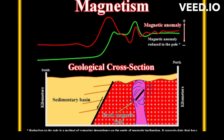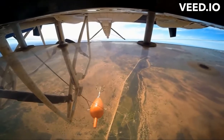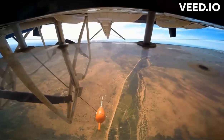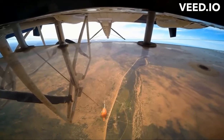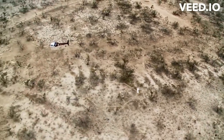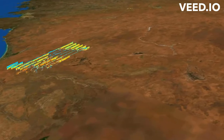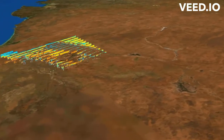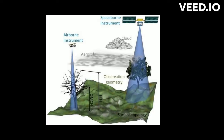Geophysical methods include seismic, gravitational, magnetic, electrical, and electromagnetic. These methods identify resources without the need for sampling, usually undertaken with minimal surface disturbance. The survey used in these methods is called a geophysical survey.